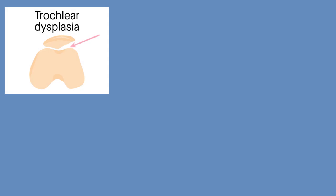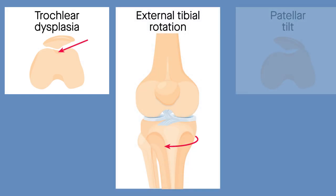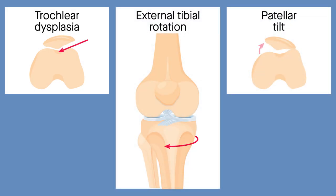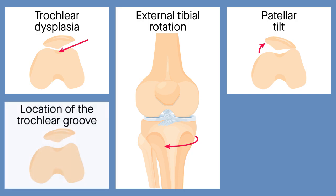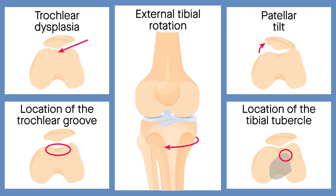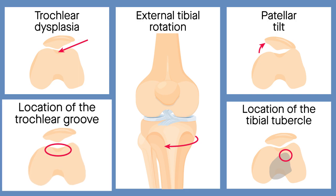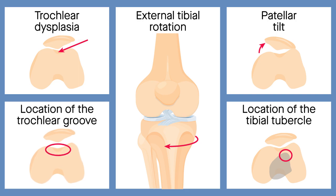The researchers looked at several variables in addition to dysplasia, including external tibial rotation, patellar tilt, and the location of the trochlear groove and tibial tubercle on the femur and tibia, respectively. These factors have recently been associated with recurring patellar instability as well, but few studies have closely examined their role in this context.